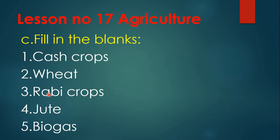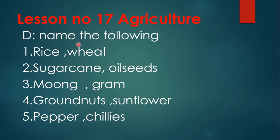Third: crops that are grown in winter season are called rabi crops. Fourth: jute is used to make carpets, bags and ropes. Fifth: in villages, cow dung is used to produce a very cheap source of energy called biogas. So the answers are: cash crops, wheat, rabi crops, jute, and biogas.